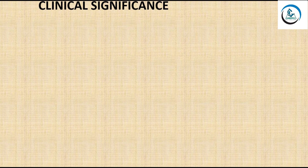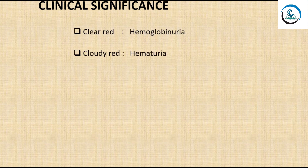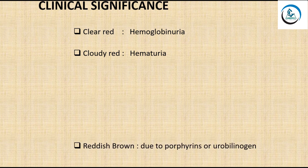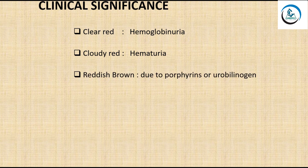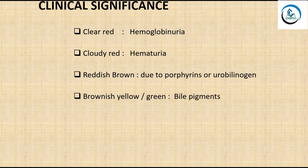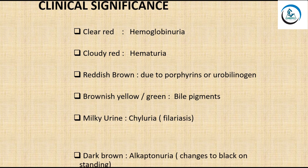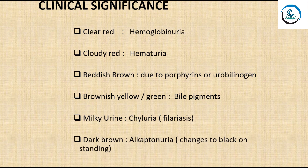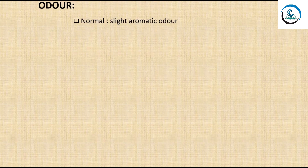The clinical significance of urine color variations: clear red is seen in hemoglobinuria; cloudy red in hematuria; reddish-brown is due to porphyrins or urobilinogen; brownish-yellow or green is due to bile pigments; milky urine is seen in chyluria, a condition of filariasis; and dark brown urine that changes to black on standing is seen in alkaptonuria.